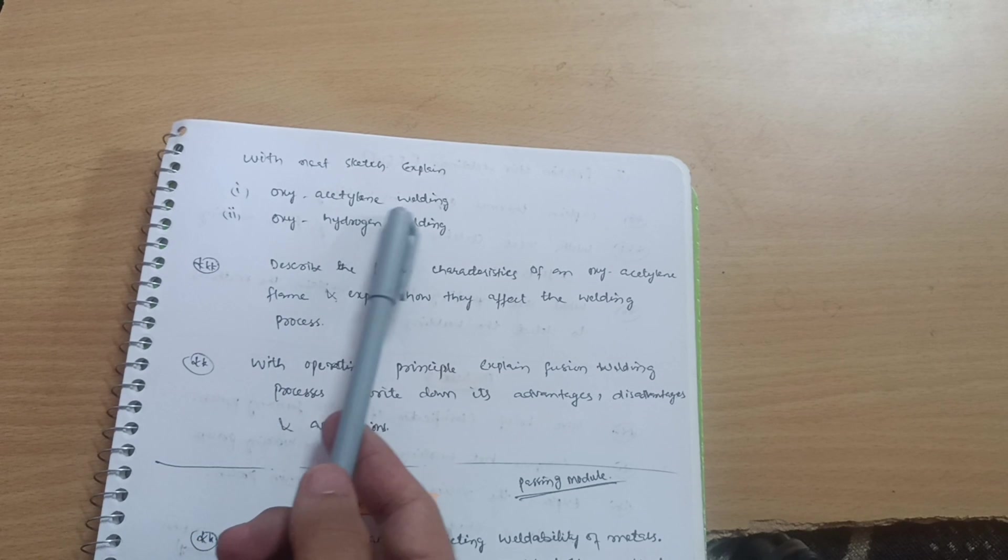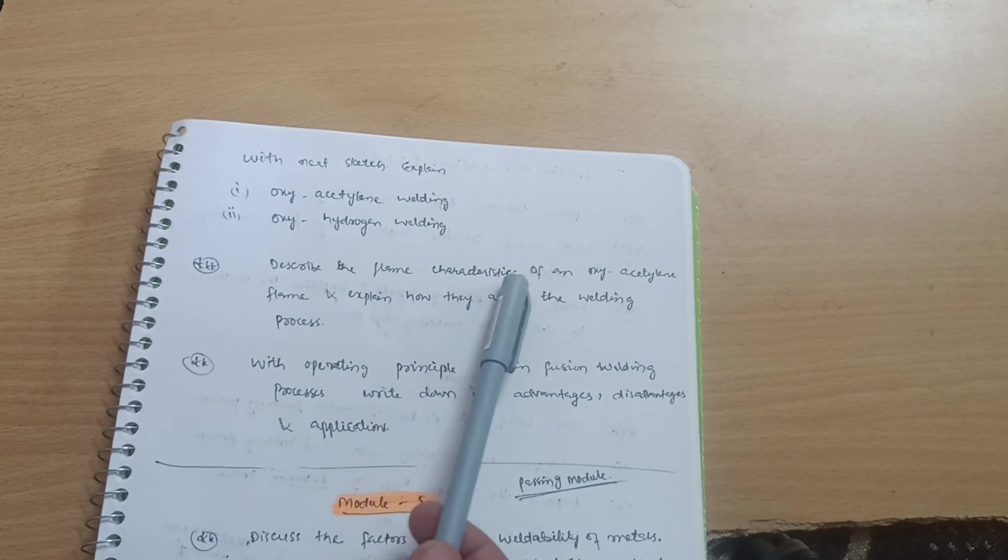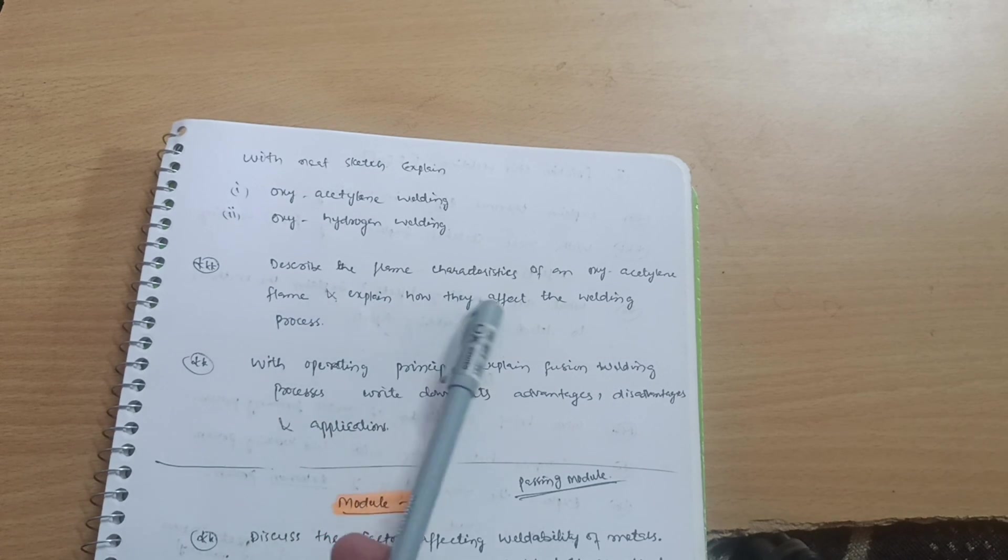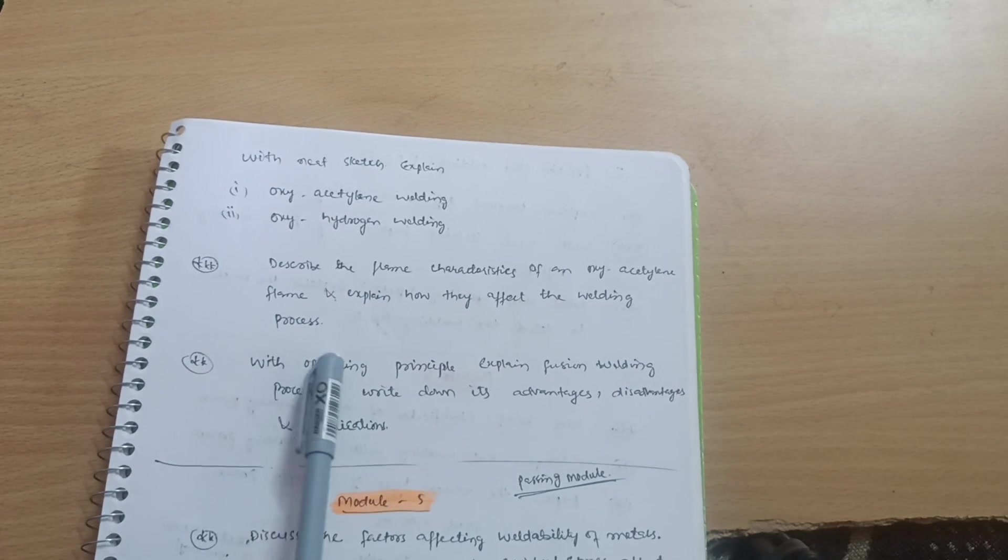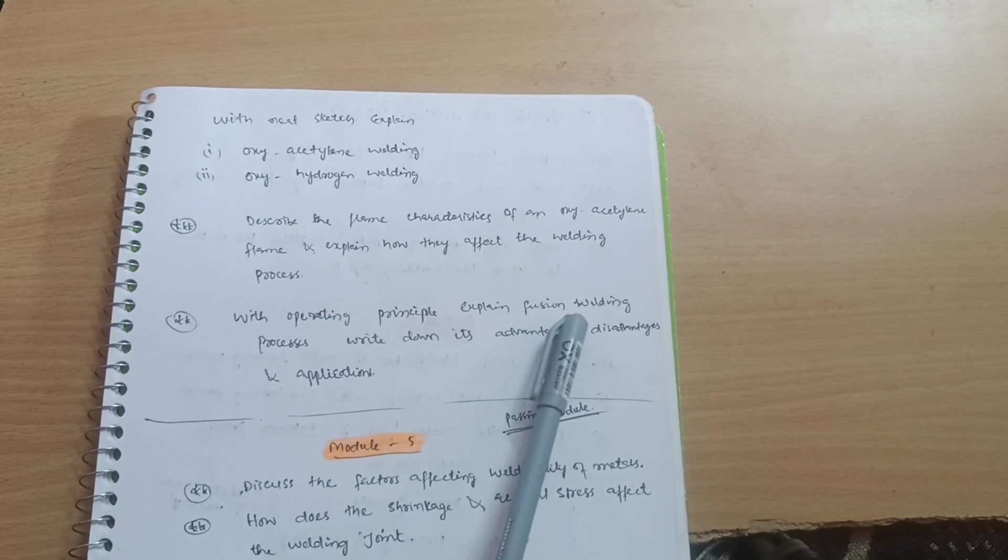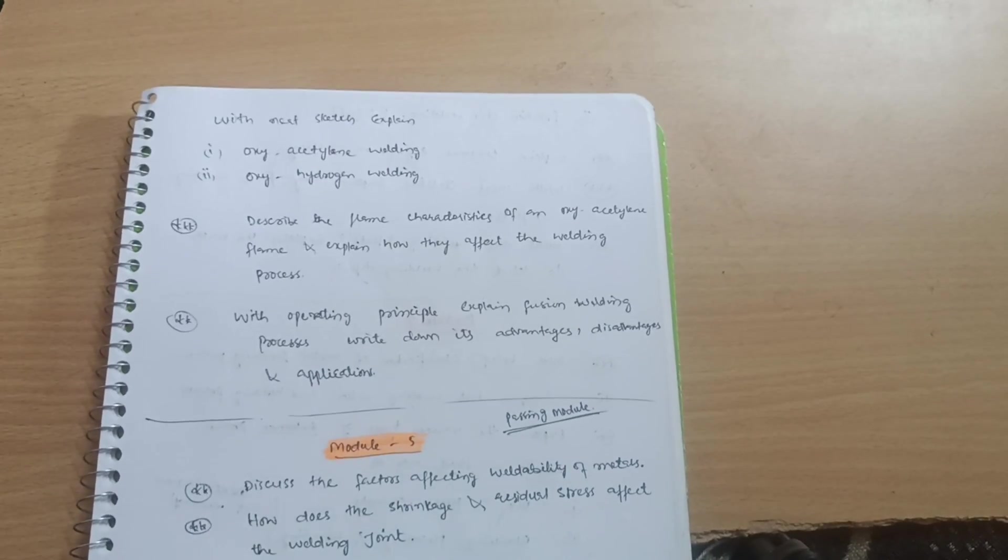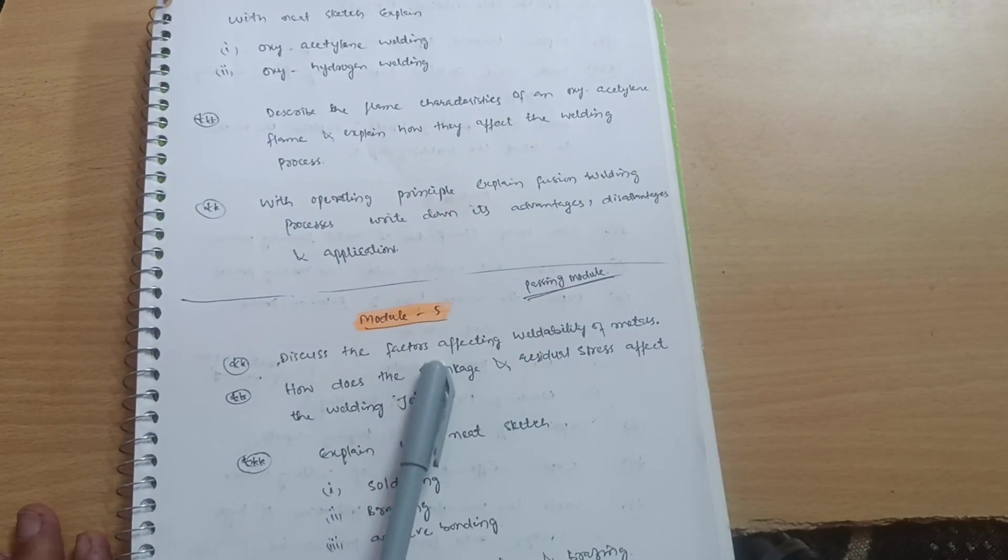Next is with neat sketch explain oxy-acetylene welding, oxy-hydrogen welding. Describe the flame characteristics of an oxy-acetylene flame and explain how they affect the welding process. Next important may be with the operating principle, explain fusion welding processes, write down its advantages, disadvantages, and applications. This is all about Module 4.